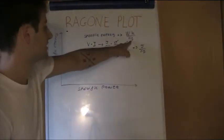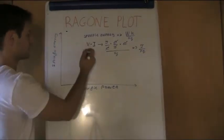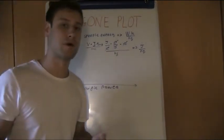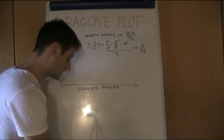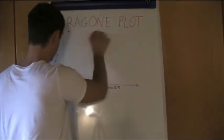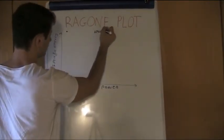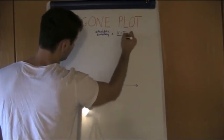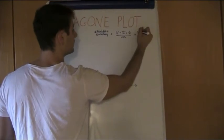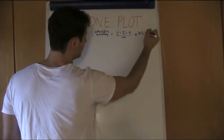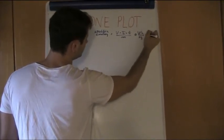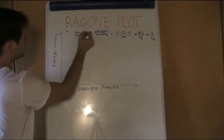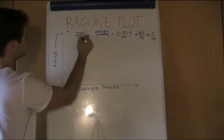So, describing specific energy — which equals voltage times current times time over mass — we are describing the total amount of energy stored inside our device, whether a battery, capacitor, and so on. The specific energy equals V·I·t / mass, and in terms of units it is watt-hours per kilogram, which is literally equal to joules per kilogram. This represents the total energy stored in the device.